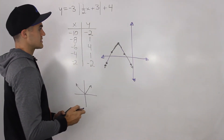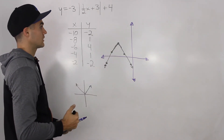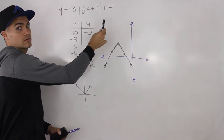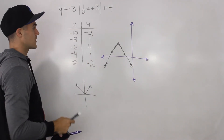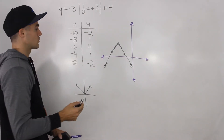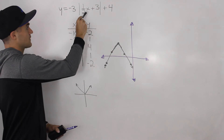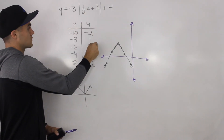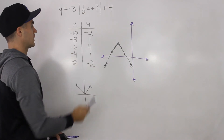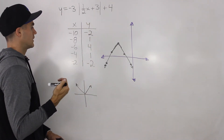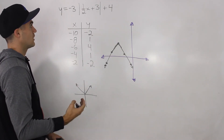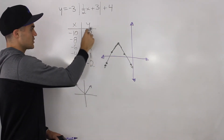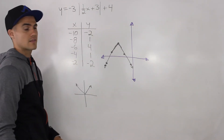We could also verify our table of values by plugging x values into the original function. For example, plugging in negative six: one half times negative six is negative three, plus three is zero, absolute value of zero times negative three is zero, plus four gives us four. Plugging in negative four: one half times negative four is negative two, plus three is one, absolute value of one is one, negative three times one plus four gives us one. This confirms our table of values.